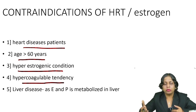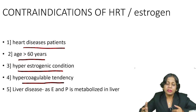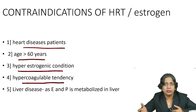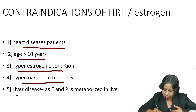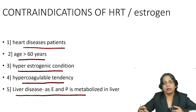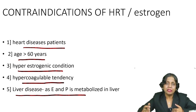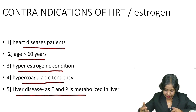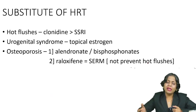Giving 100 times more estrogen will increase clotting factors much more and risk the patient's life by causing thrombosis. So we will not give HRT to patients with any hypercoagulable diseases or tendencies. Lastly, we are not going to give HRT to a patient who has liver diseases, because estrogen and progesterone are metabolized in the liver.